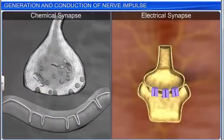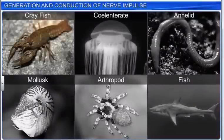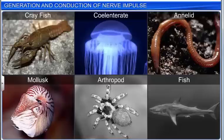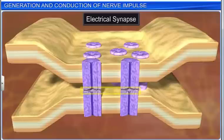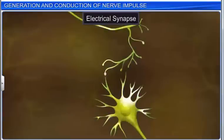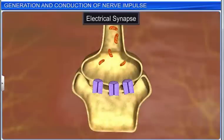Electrical synapses are the less common of the two types. They were first found in crayfish, later in coelenterates, annelids, mollusks, arthropods, and fish. The membranes of pre- and post-synaptic neurons at electrical synapses are in very close proximity, which allows the direct flow of electric current from one neuron to another. Synaptic vesicles are absent and only a few mitochondria are present.